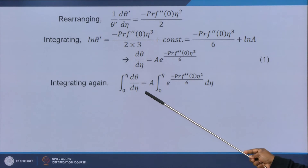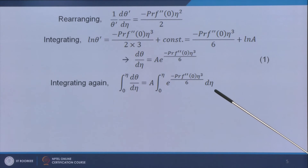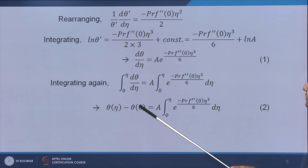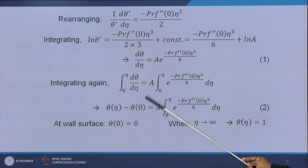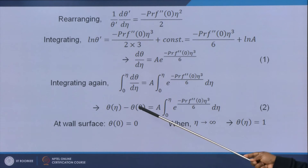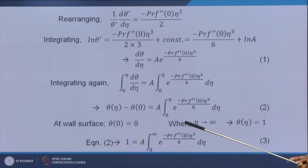Integrating once more with limits from 0 to η gives θ(η) − θ(0) = a·∫₀^η e^(−Pr·f''·η³/6) dη. Applying boundary conditions θ(0) = 0 and θ(∞) = 1, we get 1 = a·∫₀^∞ e^(−Pr·f''·η³/6) dη, which allows us to determine the constant a.